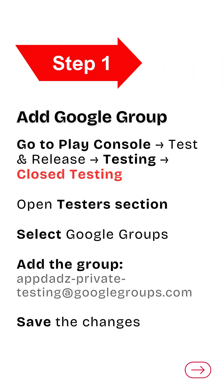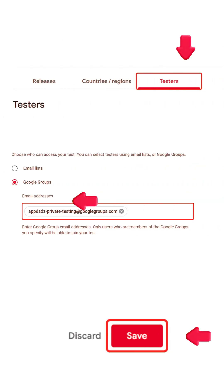Open Play Console, go to Closed Testing, and open the Testers section. Select Google Groups, add the group, and save your changes.